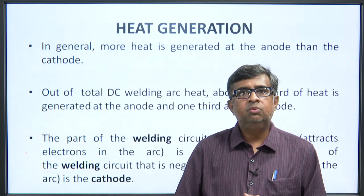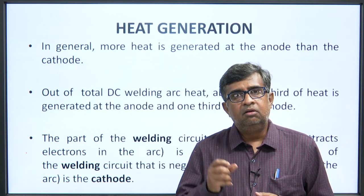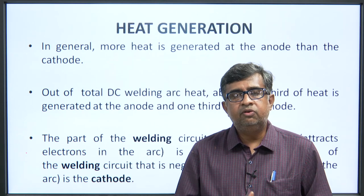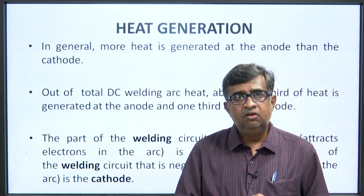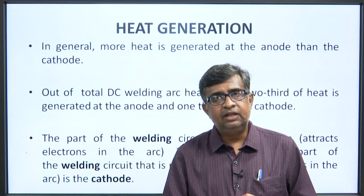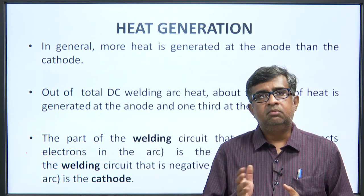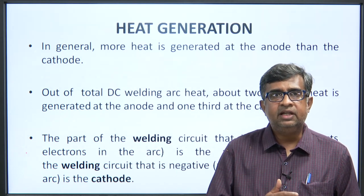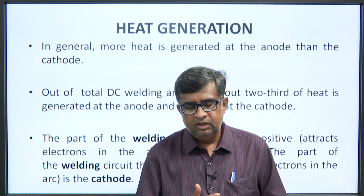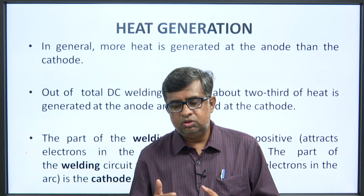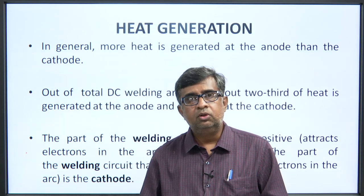Heat generation: we all know that welding is a process where a lot of heat is generated, but how that heat generation affects our welding has to be understood carefully. In general, more heat is generated at the anode than the cathode. Roughly, out of the total DC welding arc heat, about two-thirds is generated at the anode and one-third at the cathode.